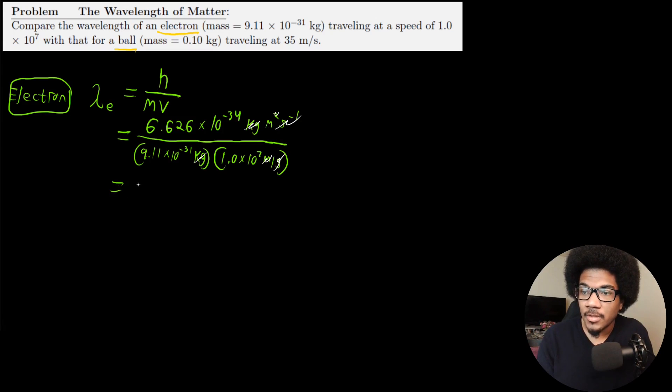So the final answer that you get here for the wavelength of an electron is 7.27×10^-11 meters. So that's going to be the wavelength for an electron.